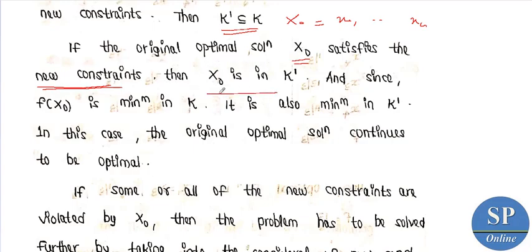Then x0 is an element of K-dash, and since f of x0 is minimum in K, and K-dash is a subset of K, x0 is also the minimum in K-dash.